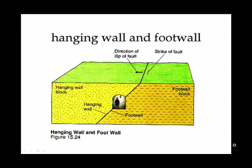Before we go any further, you have to understand the concepts of hanging wall and foot wall. This terminology was created by miners. It's not a surprise that miners were mining along fault zones — that's where hydrothermal veins are most likely to occur, along cracks in the rock through which hot water could seep and deposit important minerals. Above the miner's head is the hanging wall, and at his feet is the foot wall.